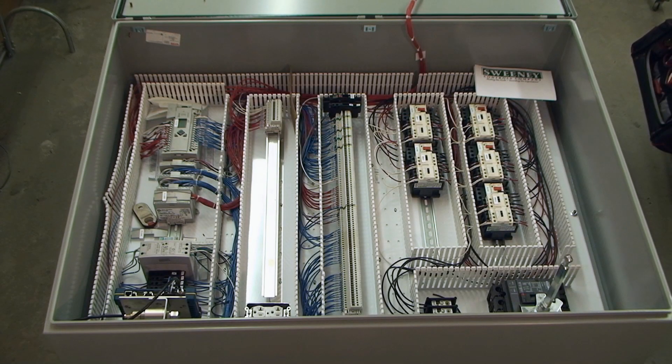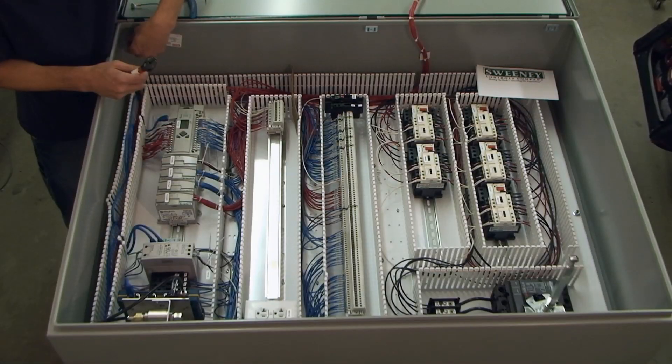After the circuit breaker assembly is mounted, the power wiring from the circuit breaker to the distribution block can be finished.